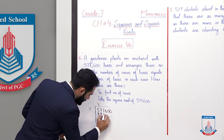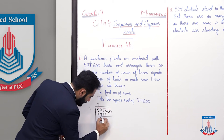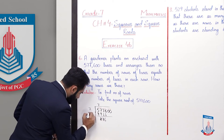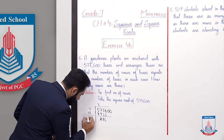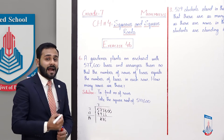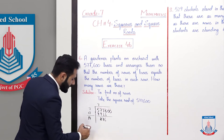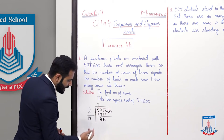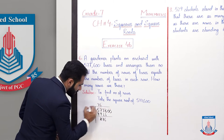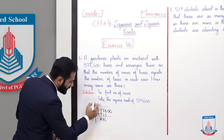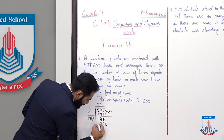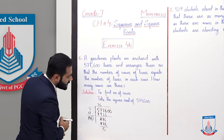We bring down the next pair, 76. Now add 7 to 7: 7 plus 7 equals 14. We find which digit added to 14 and multiplied gives the nearest value to 876. Adding 6: 146 into 6 equals 876. Subtracting gives remainder 0.